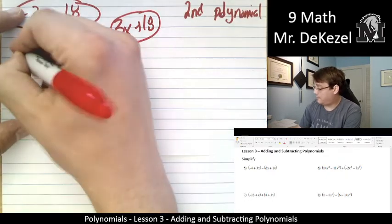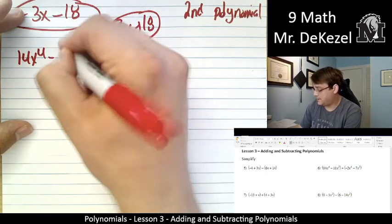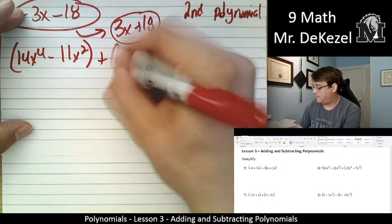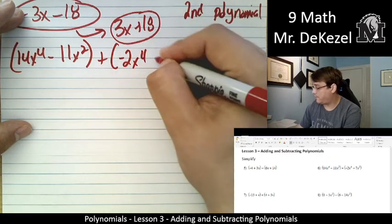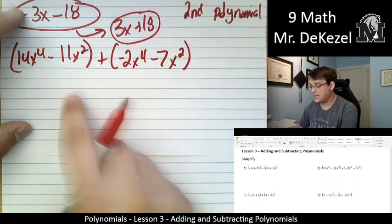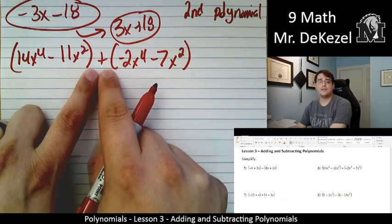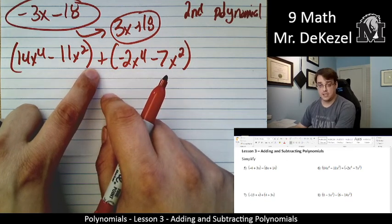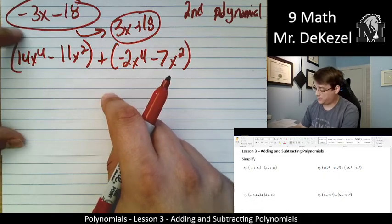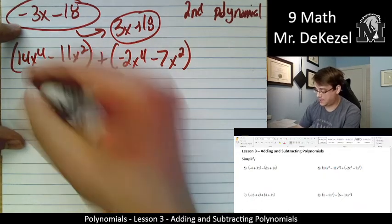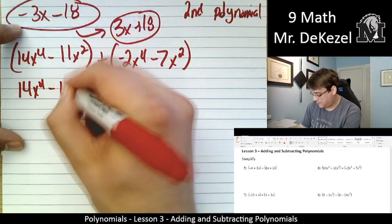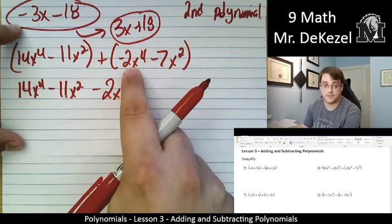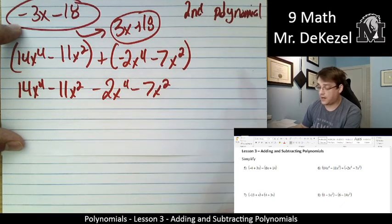We have 14x to the power of 4 minus 11x squared in brackets, plus minus 2x to the power of 4 minus 7x squared. Since we have an addition sign, we just leave the signs inside this bracket the same when we rewrite it. So we can just add normally. That's 14x to the 4 minus 11x squared minus 2x to the power of 4, minus 7x to the power of 2.